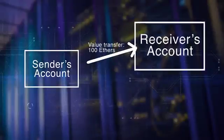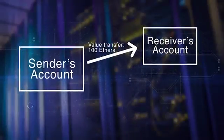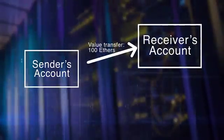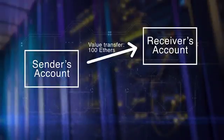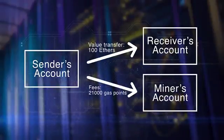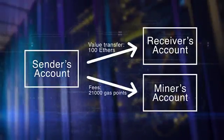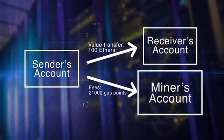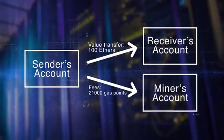For a simple Ether transfer, the amount to transfer and the target address are specified along with the fees or gas points. The amount and the fees are transferred to their respective accounts. Here we illustrate a transaction of 100 Ether transfer between the sender's and receiver's accounts. Note that besides this transfer, 21,000 gas points are paid to the miner who added the transaction block to the blockchain.